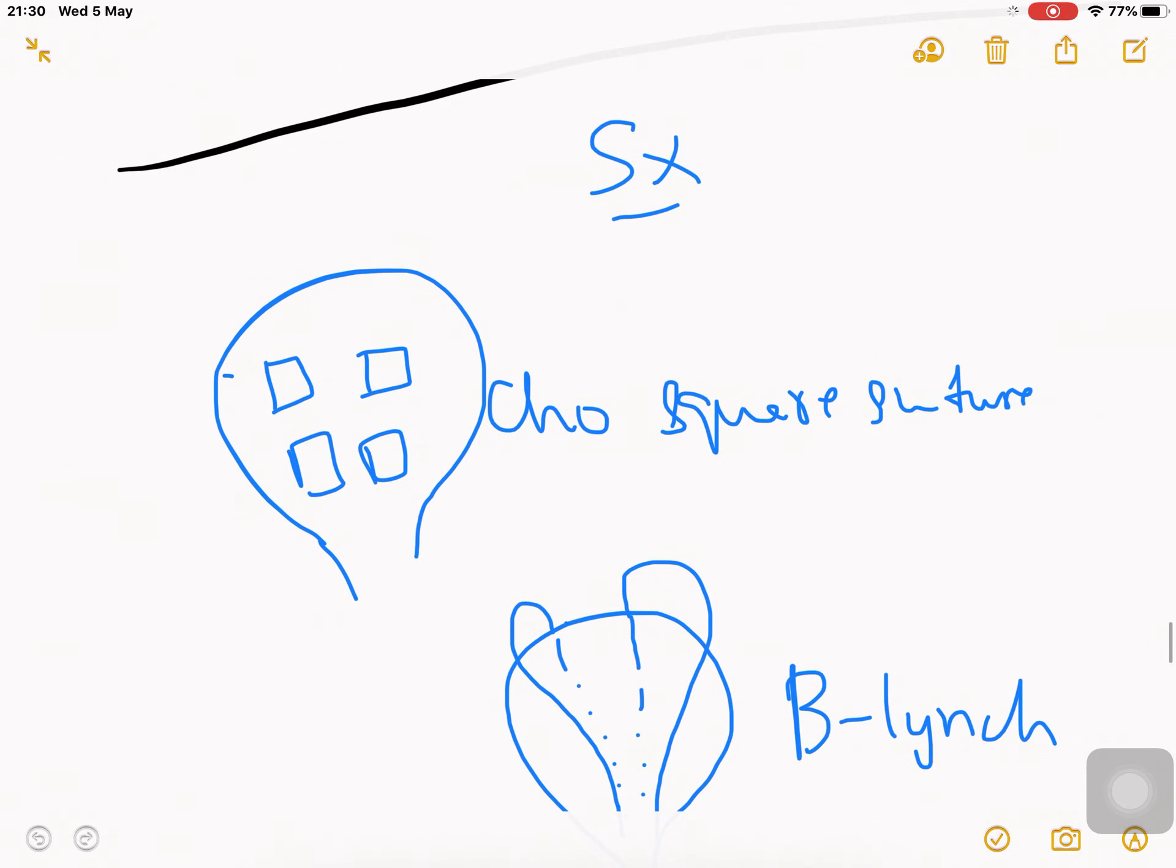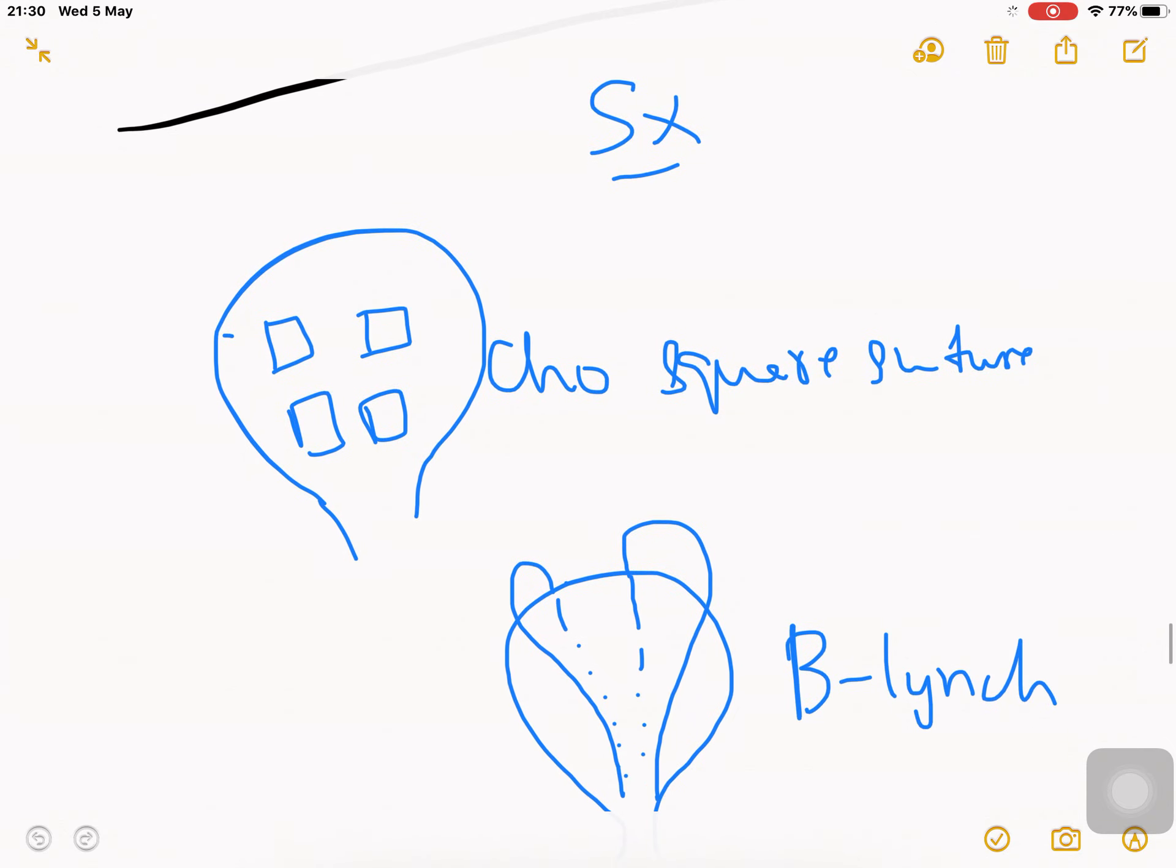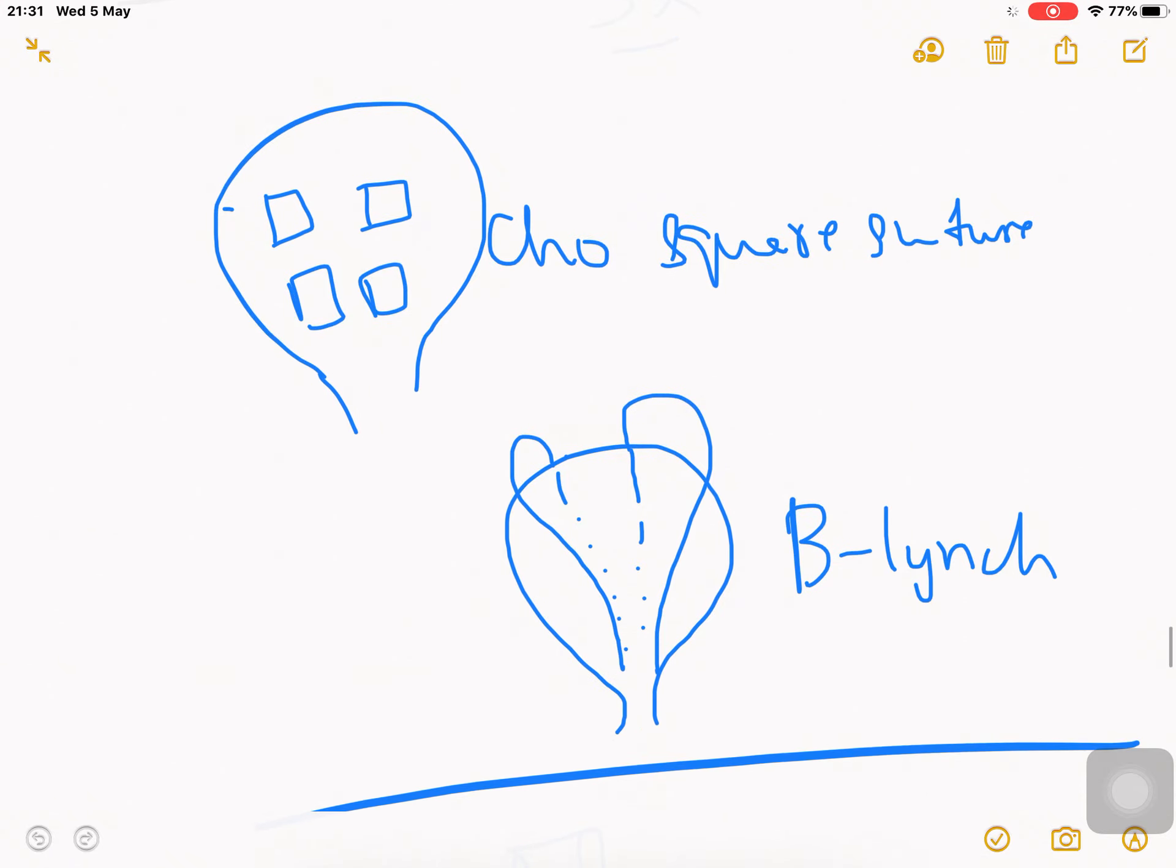Surgery is the next modality. We're trying to bring the walls of the uterus together using sutures. We use Cho square suture - just four basic square-shaped sutures in the upper right, upper left, lower right, lower left quadrants of the uterus. B-Lynch suture brings the front and back walls of the uterus together.